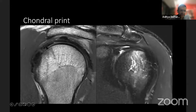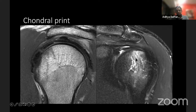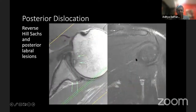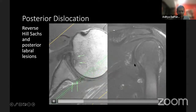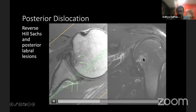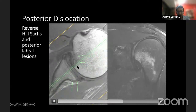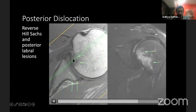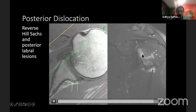Here's a case demonstrating internal impingement with a flattened biceps tendon producing bony remodeling in the anterior superior humeral head — the chondral print appearance. Here's another example of a posterior dislocation with bone marrow edema, a reverse Hill-Sachs lesion with extensive bone marrow edema, and a sizable posterior labral tear where the labrum has peeled off the posterior glenoid.